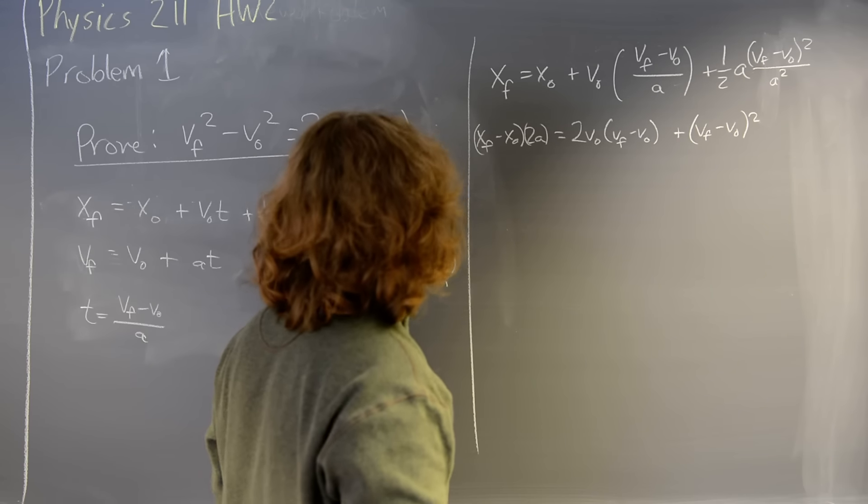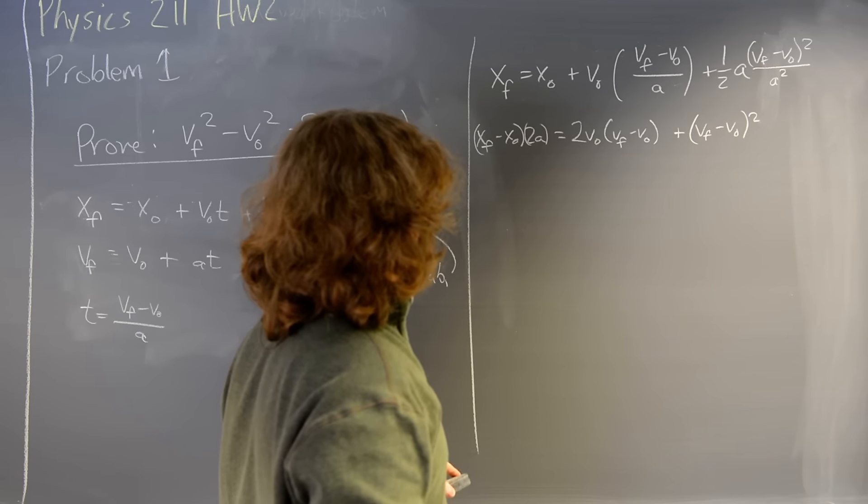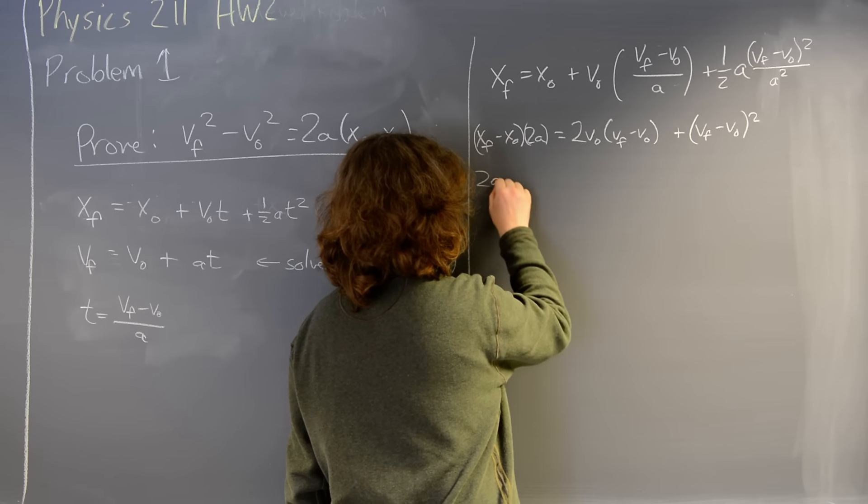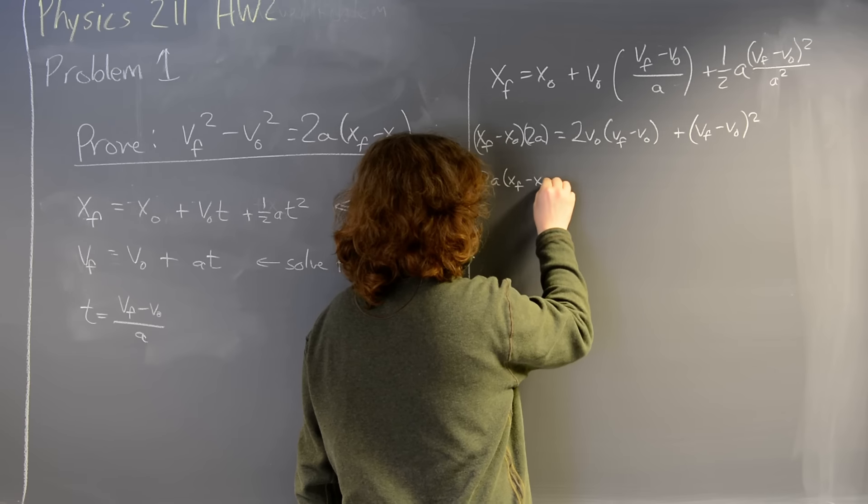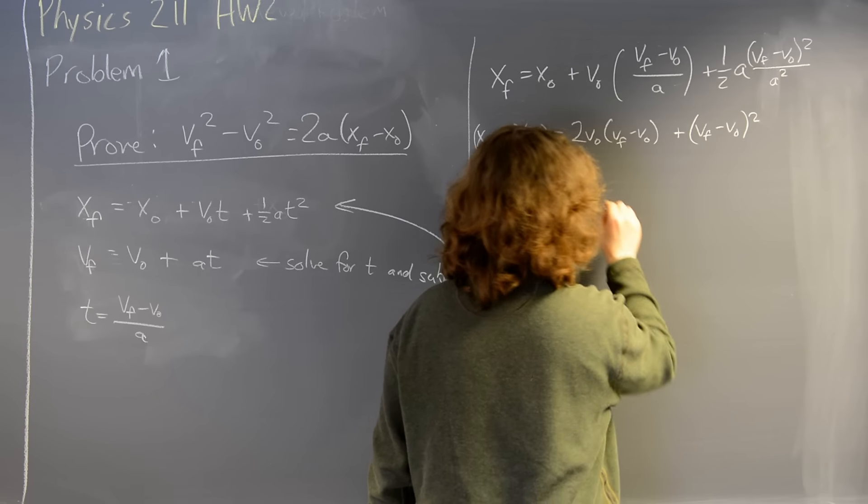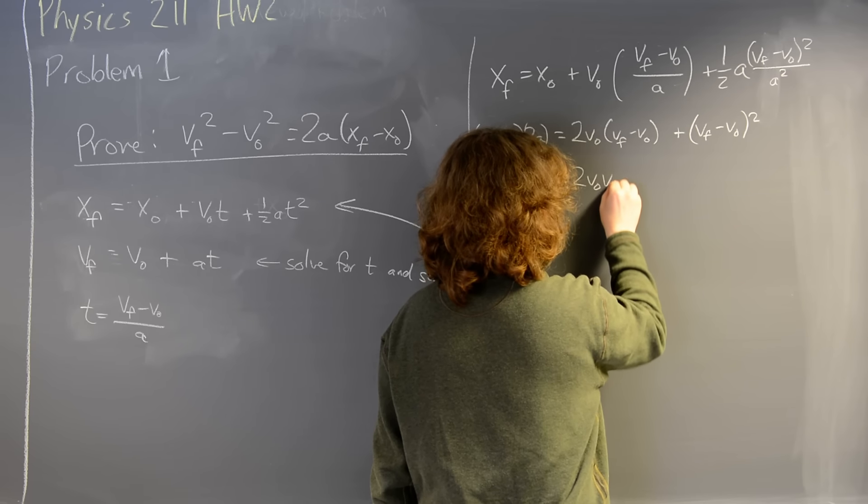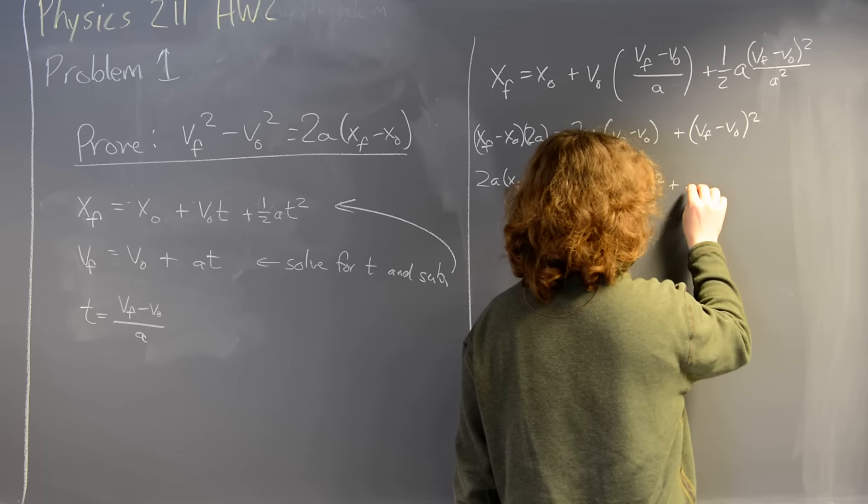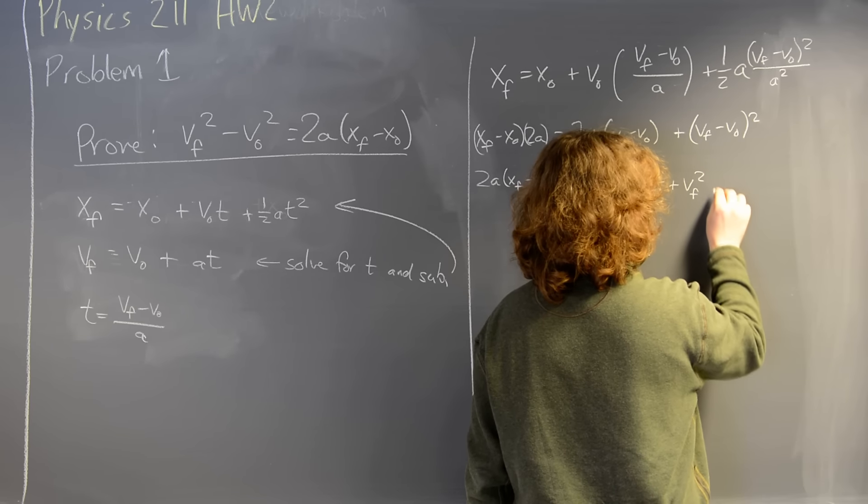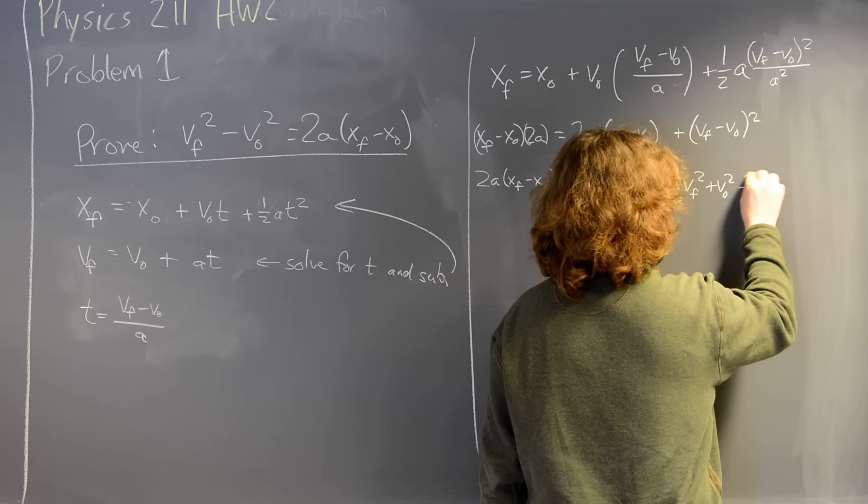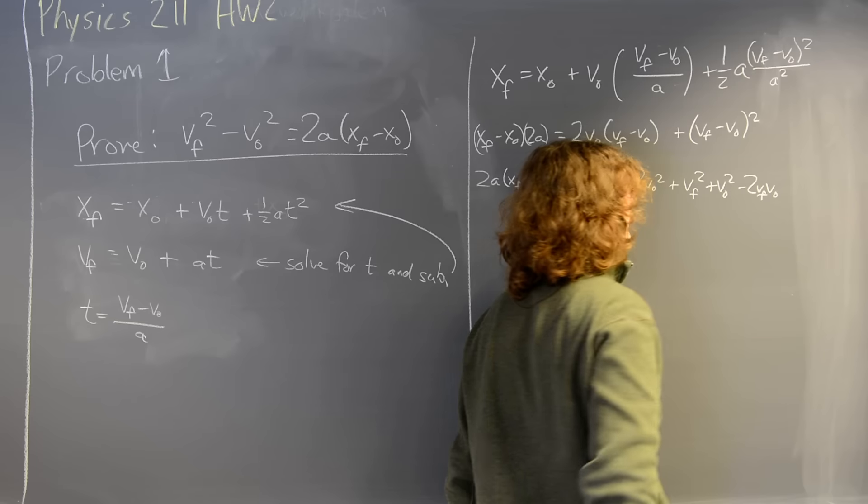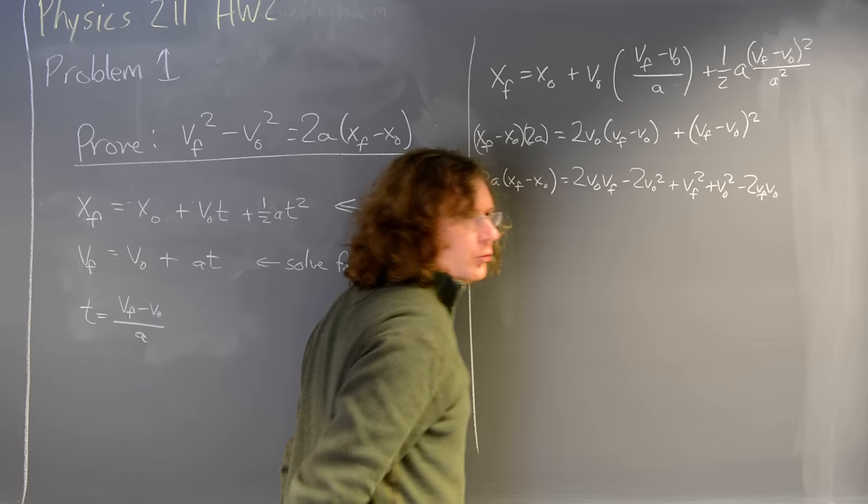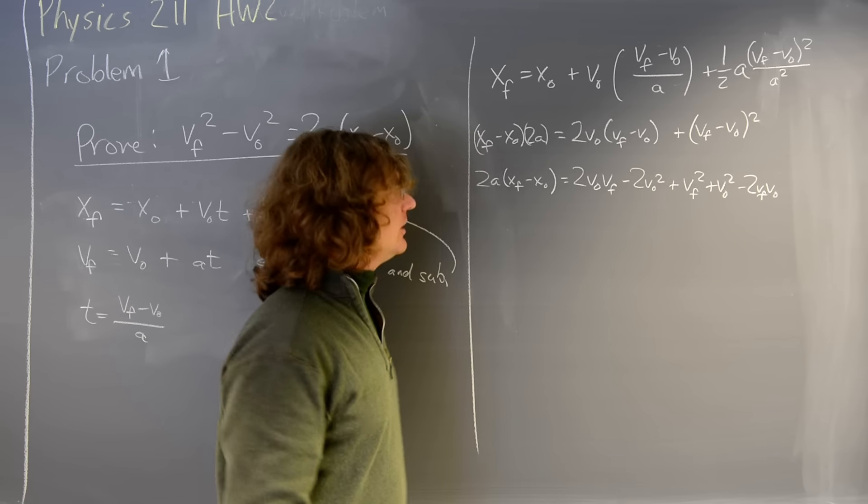So now I need to simplify this. I'm going to multiply out everything on the right. This gives me 2a times xf minus x0, and that equals 2v0 vf minus 2v0 squared plus vf squared plus v0 squared minus 2vf v0. This is simply from the rules of multiplying algebra that you learned in middle school.